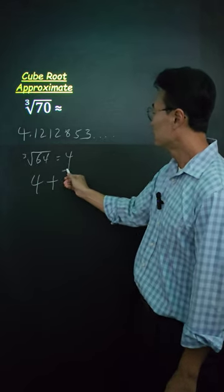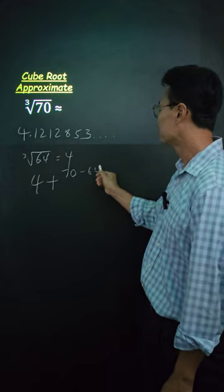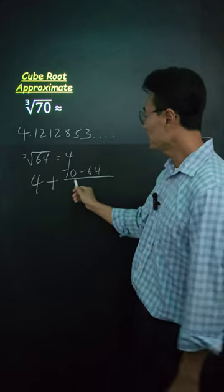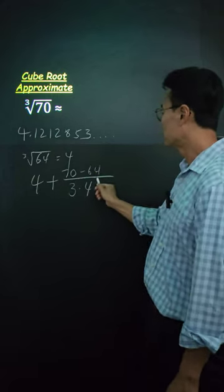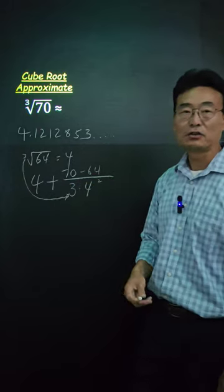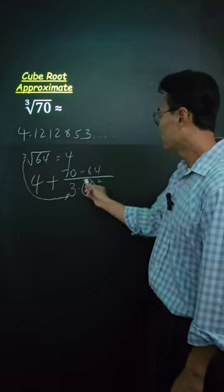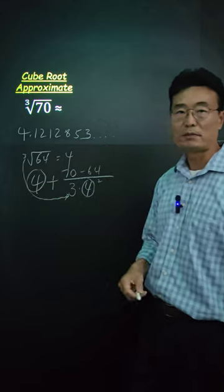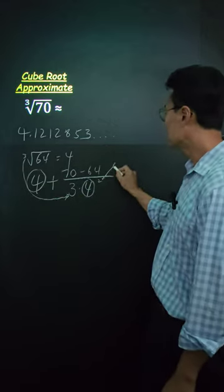Then, we take the 4, add the difference of 70 and the 64, divided by 3 times 4 squared. The 3 is always going to be 3, because we're taking the cube root of the 4 here, and the 4 here will always match up. And then 2 is always 2.